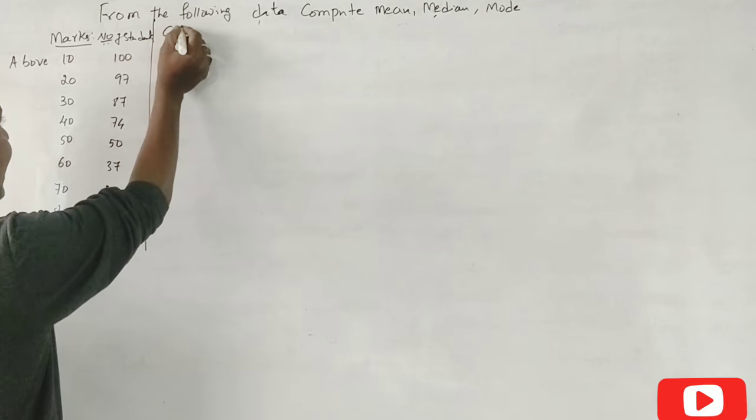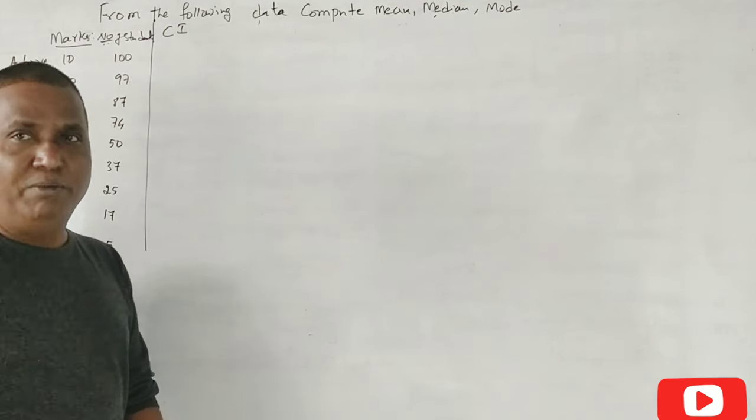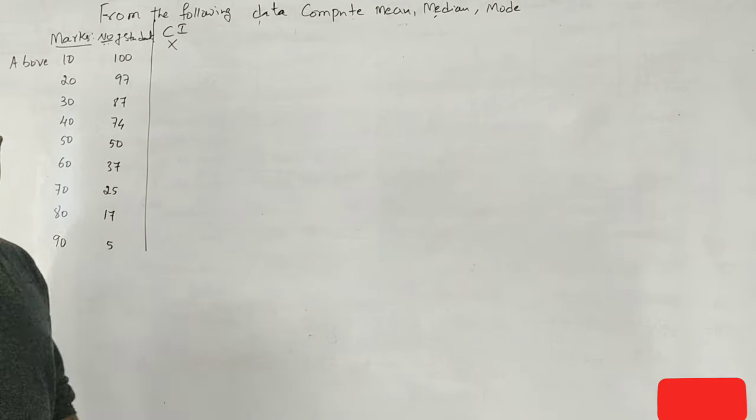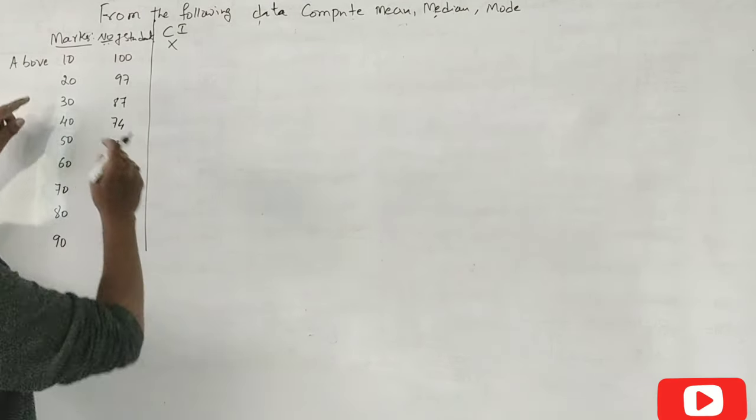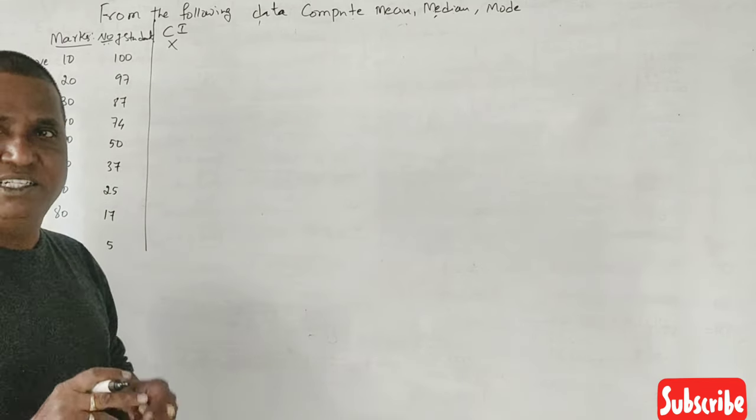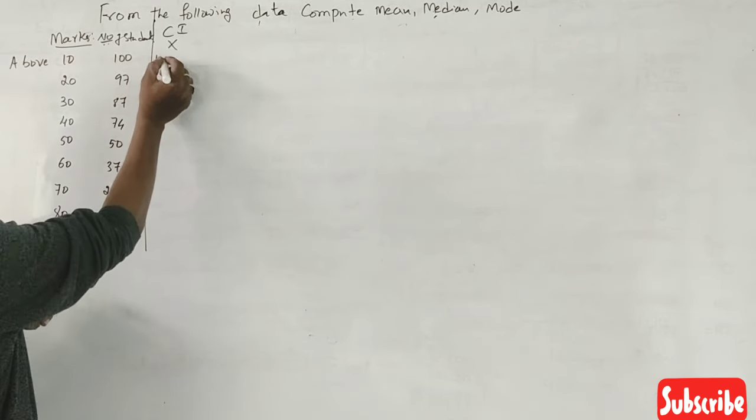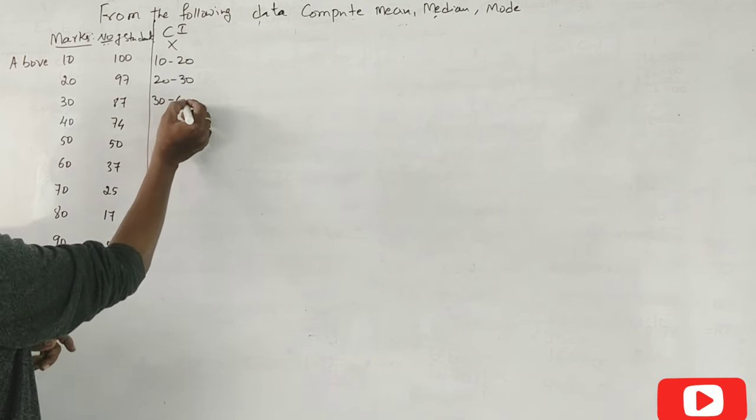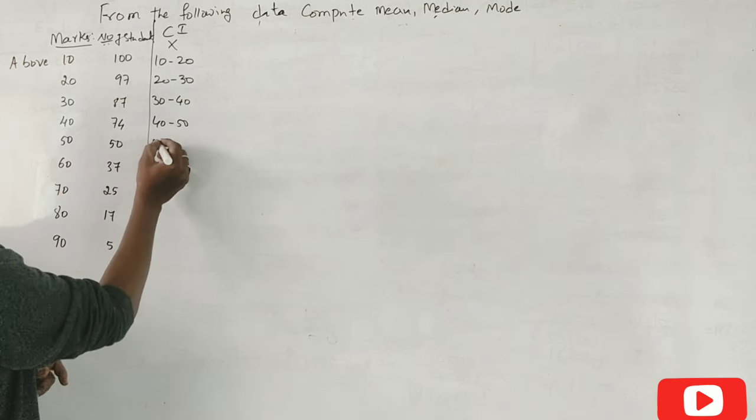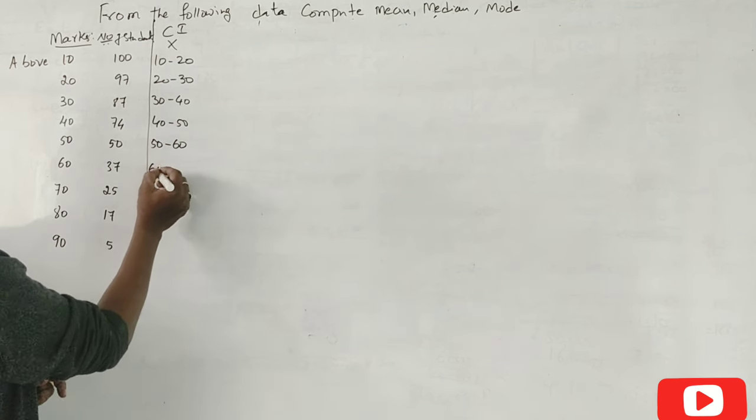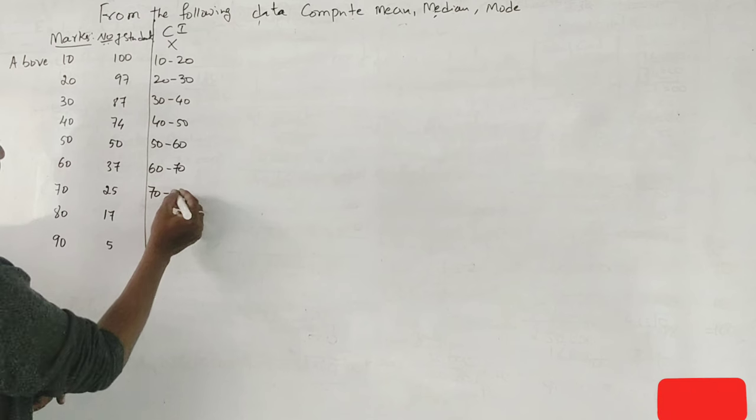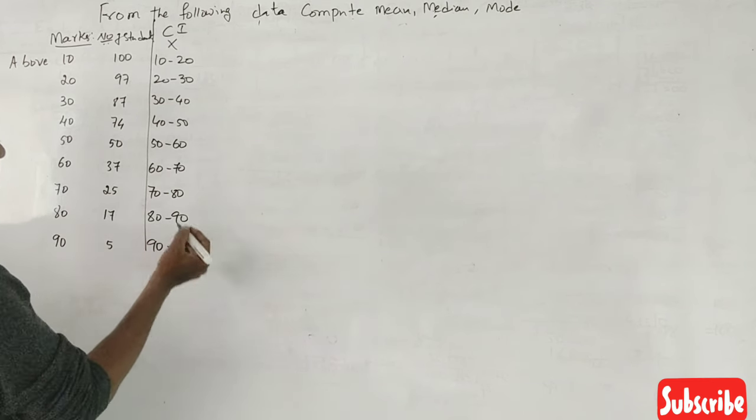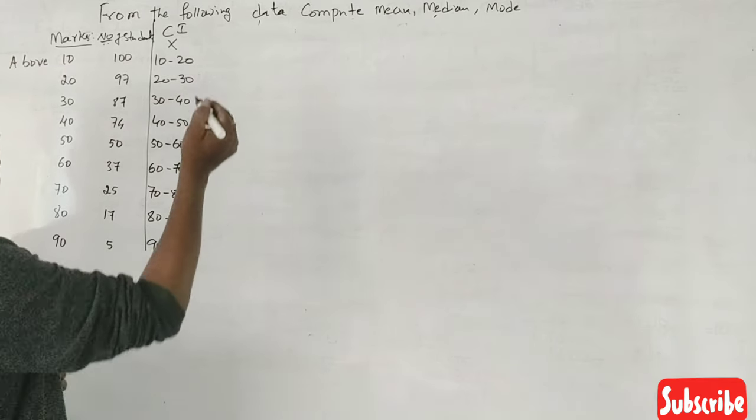Rearranging multiple class interval. That is the class interval X and the difference between each class interval is 10. About 10 to 20, 20 to 30, 30 to 40, 40 to 50, 50 to 60, 60 to 70, 70 to 80, 80 to 90, 90 to 100. Correct? Yes sir. Correct. It is frequency.